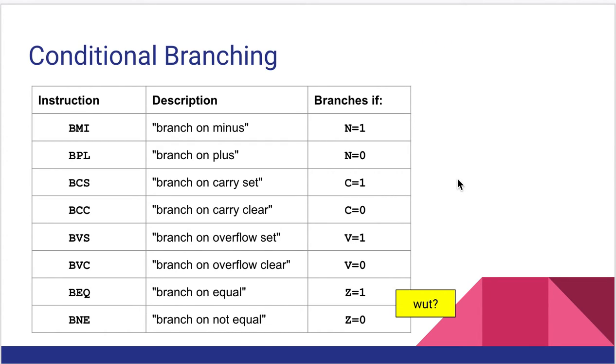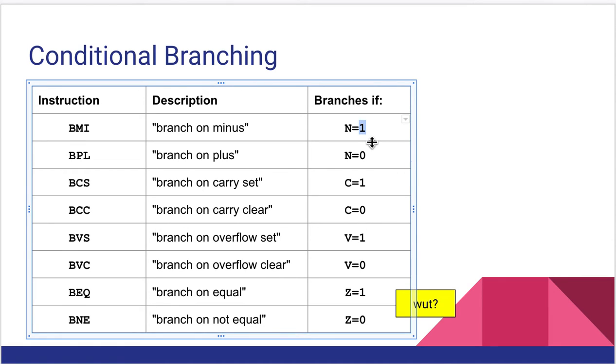So let's look at the types of conditional branches, and there are eight of these. First we'll look at BMI and BPL. BMI says branch on minus, meaning we branch if the N flag is set. If the N flag is set, we have a negative result, so we branch if that is true. BPL, branch on plus, branch if the N flag is zero, meaning we have a positive result created by the last instruction. Pretty straightforward.